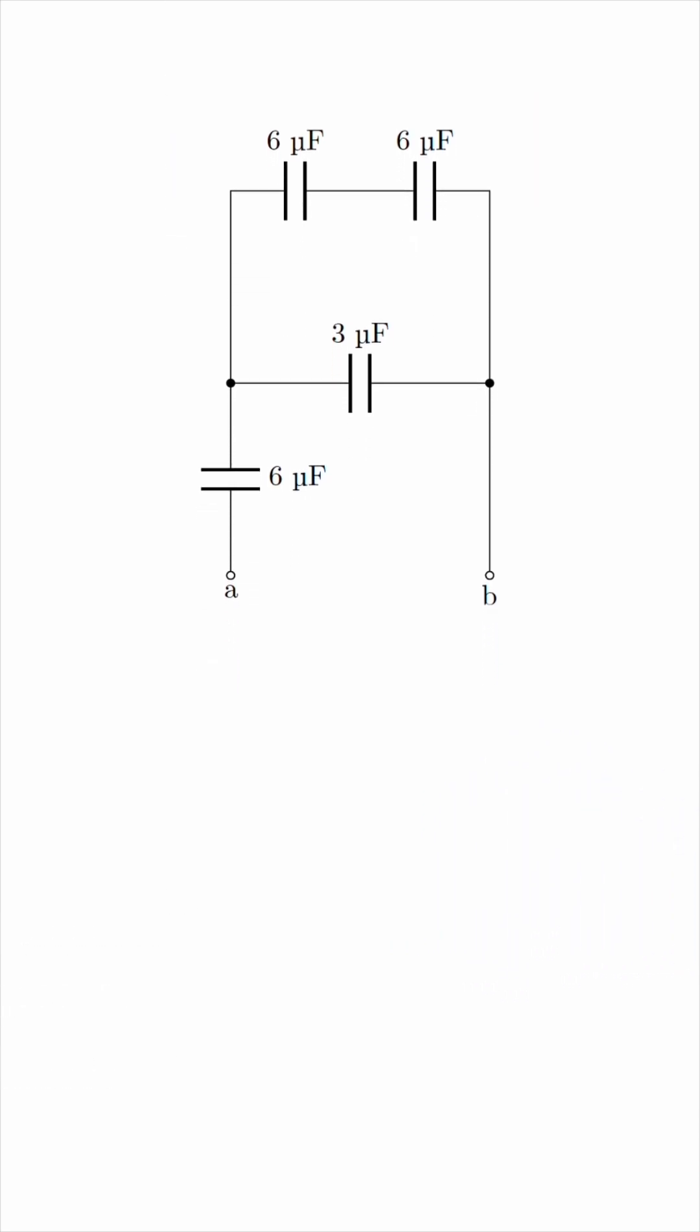First things first, these two capacitors are clearly in series. Series capacitors are combined just like parallel resistors. So we would do 6 times 6 over 6 plus 6 to get the equivalent capacitance. This is 3, so those two capacitors can be replaced with a single 3μF capacitor, like this.